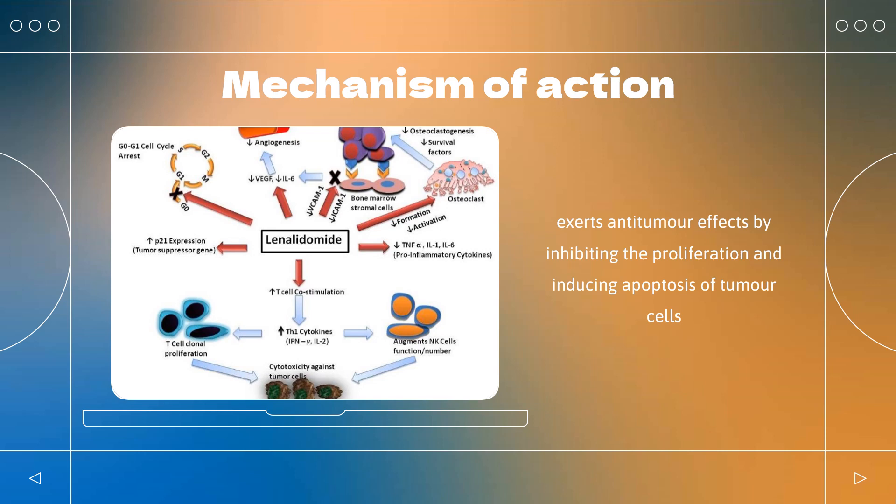Independent of its immunomodulatory effects, lenalidomide mediates anti-angiogenic effects by inhibiting angiogenic growth factors released by tumor cells, such as vascular endothelial growth factor (VEGF), basic fibroblast growth factor (bFGF), and hepatocyte growth factor. In vitro, lenalidomide inhibits cell adhesion molecules such as ICAM-1, LFA-1, beta-2 and beta-3 integrins, as well as gap junction function, thereby preventing metastasis of malignant cells.